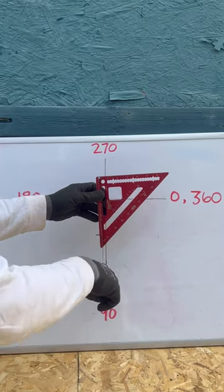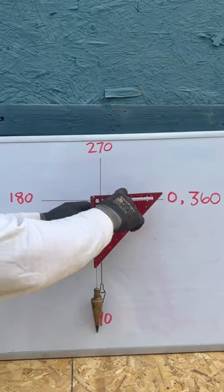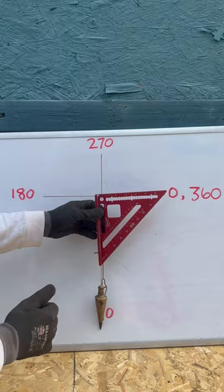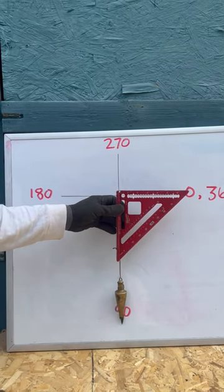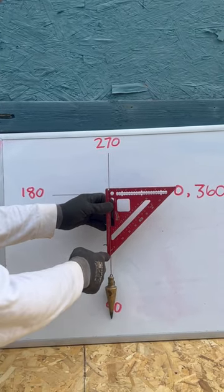Now look, my plumb bob is pointing at a 90-degree angle. This leg of my triangle right here is on the zero-degree line. Now this is my vertex. Now my plumb bob is indicating zero.